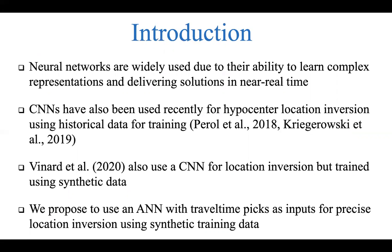Looking at the literature, we find that convolutional neural networks have been used for hypocenter location using historical data for training. However, one downside with these methods is that convolutional neural networks require a huge amount of data to train their thousands or tens of thousands of parameters, and therefore the amount of data available may not be sufficient for good training of those complicated networks.